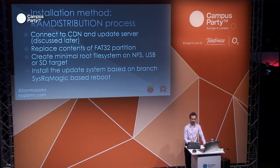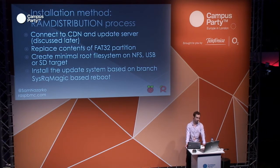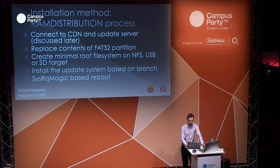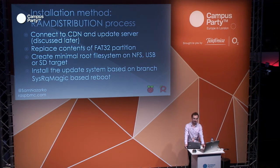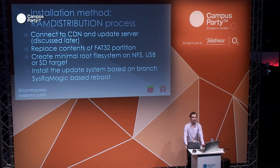Once RAM distribution runs, it connects to the content delivery network. It replaces the content of the FAT32 partition, downloads a root file system and puts it on the NFS, USB or SD target the user specified. It inserts an update system, and then performs a sysRQ magic-based reboot. The reason for the emergency reboot is speed — we can just reboot without worrying about corrupting any file systems or waiting for processes to terminate gracefully, because we are running in RAM.